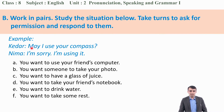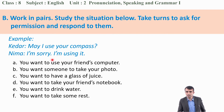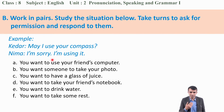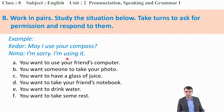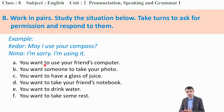An example is given here. Kedar and Nima are talking. Kedar says 'May I use your compass?' and Nima says 'I'm sorry, I'm using it.' Here Nima withholds permission because Nima is using the compass. In the same way, you can talk about the given situations — in every situation you can either grant permission or withhold permission.